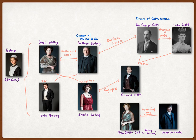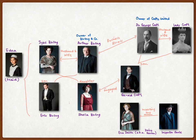Sir George Croft and Lady Croft are the owners of Crofts Limited, and Sir George Croft is a business rival of Arthur Birling. You can also see Edna, who is the helper in the Birling family. Apart from these people, you can also see Inspector Goole, who visits the family during their dinner to investigate the suicide case of Eva Smith. And later you will find out that Eva Smith has relationships with almost everyone in the Birling family and Gerald Croft.